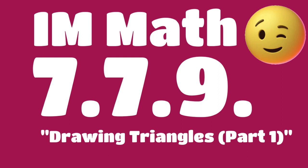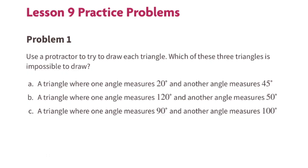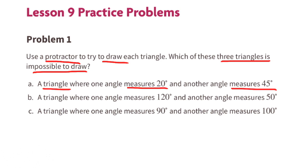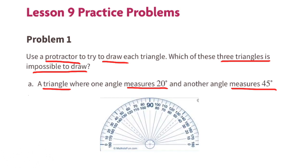7th grade unit 7 lesson 9: Drawing Triangles Part 1 — Illustrative Mathematics practice problems. Problem number one: use a protractor to try to draw each triangle. Which of these triangles is impossible to draw? Part a: a triangle where one angle measures 20 degrees and another angle measures 45 degrees. Let's use this protractor to draw the first angle that measures 20 degrees.